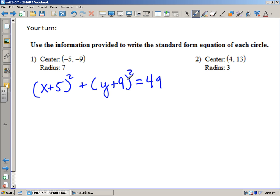That's all there is to do for number 1. Number 2, same exact deal. I'm going to have x minus 4 squared plus y minus 13 squared, and that's going to equal 9.